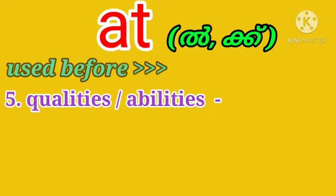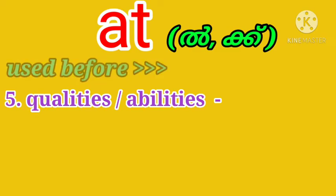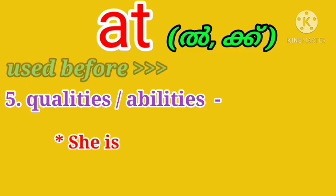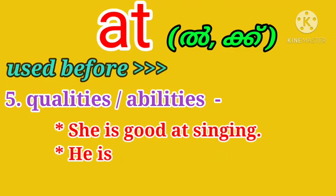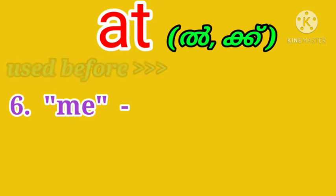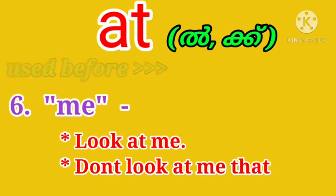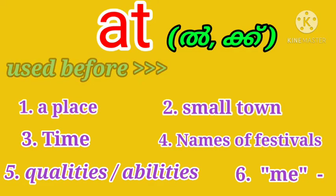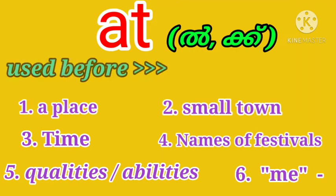We can use the preposition 'at' before qualities or abilities. For example: she is good at singing, he is good at tennis. We can also use 'at' before the pronoun 'me' — for example, look at me, don't look at me that way. So to summarize: we use 'at' before a place, a small town, to mention time, before names of festivals, before qualities or abilities, and before the pronoun 'me'.